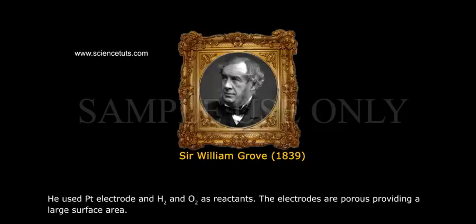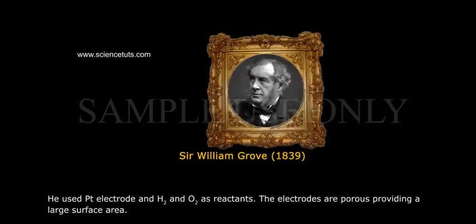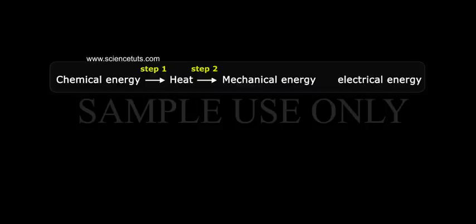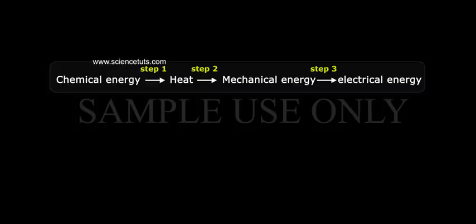The electrodes are porous, providing a large surface area. In conventional energy conversion: Step one, chemical energy is converted into heat. Step two, heat is converted into mechanical energy. Step three, mechanical energy is converted into electrical energy.